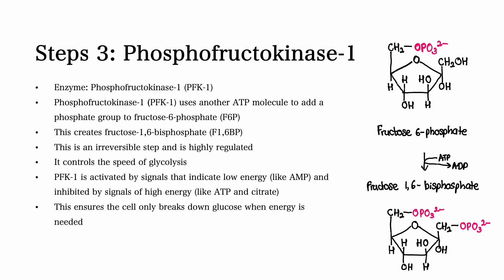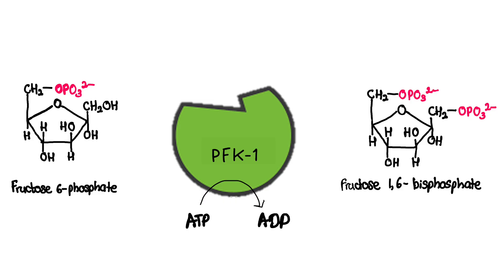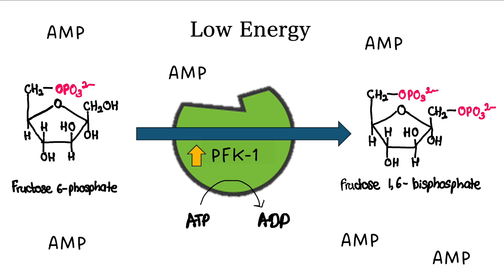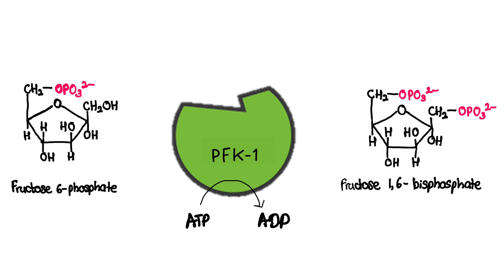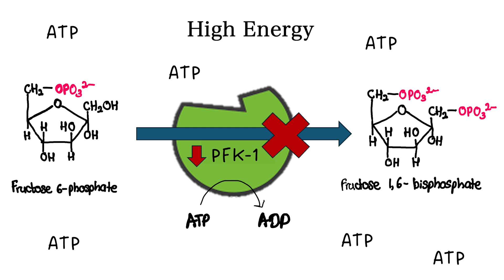Step number three. Phosphofructokinase 1 is the enzyme that is predominant in this step. This is a crucial step where phosphofructokinase 1 uses another ATP molecule to add a phosphate group to fructose 6-phosphate, creating fructose 1,6-bisphosphate, also called F1,6-bisphosphate. This step is irreversible and highly regulated, meaning it controls the speed of glycolysis. Phosphofructokinase 1 is activated by signals of low energy such as AMP, and inhibited by signals of high energy like ATP and citrate. This ensures that the cell only breaks down glucose when energy is needed.